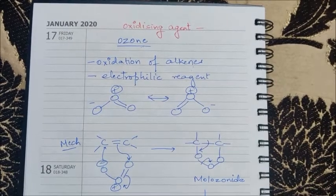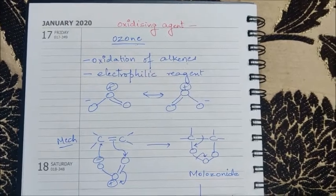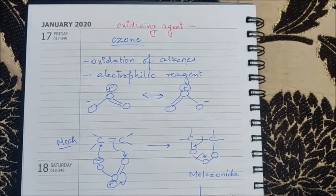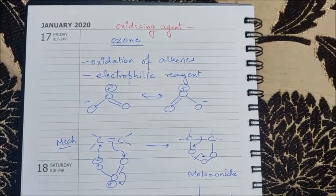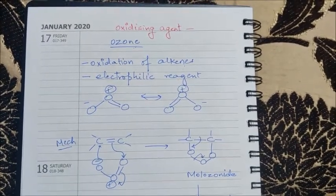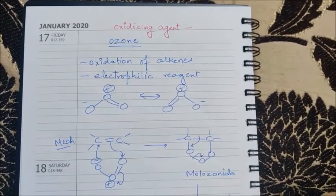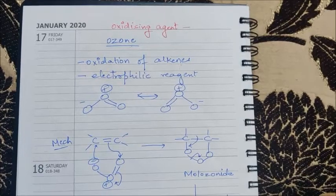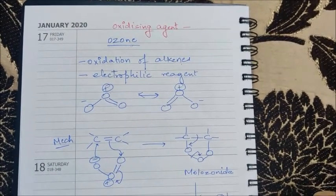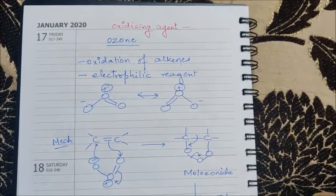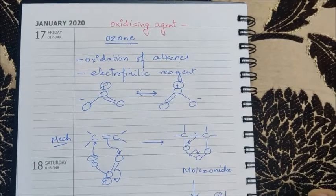Good morning class, welcome to Full Syllabus Channel. Today we will be doing the next oxidizing agent, that is ozone. First, let's discuss what ozone does and its mechanism. Ozone basically does the oxidation of alkenes into fragments of aldehydes or ketones, and sometimes acids.